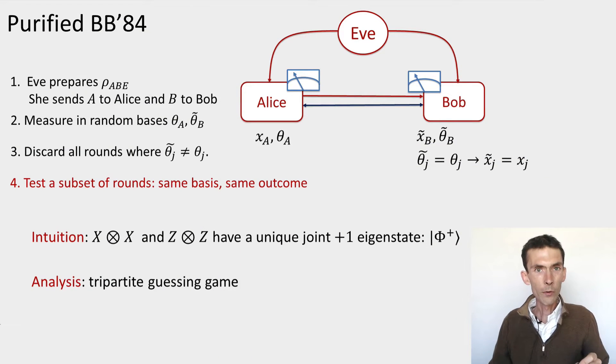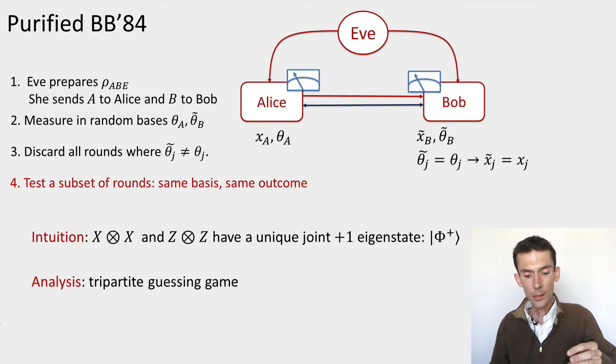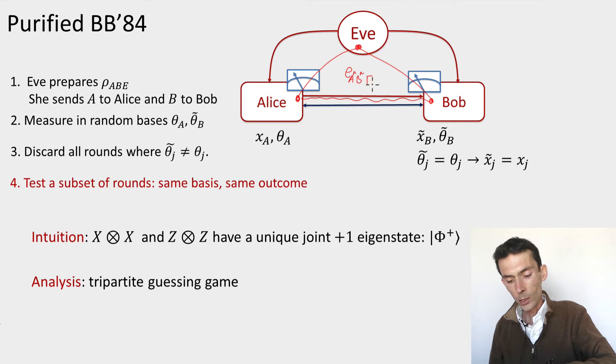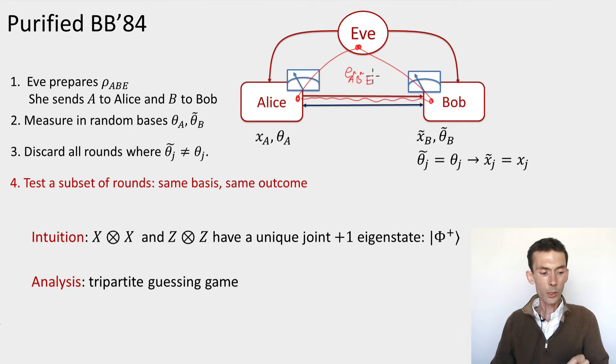So let me remind you of this purified BB84 protocol. What we imagine is that in the first step of the protocol, Eve gets to prepare an arbitrary tripartite state and she keeps the E system to herself. She gives A to Alice, B to Bob, and in this way creates an arbitrary tripartite entangled state where A has n systems, B has n qubits, and E is the part that she keeps to herself.